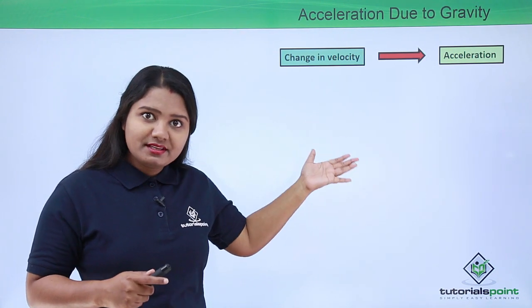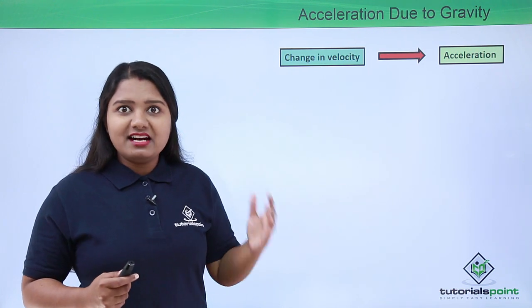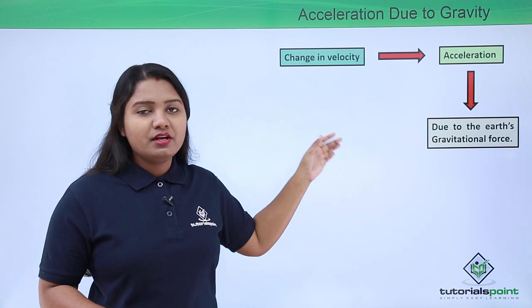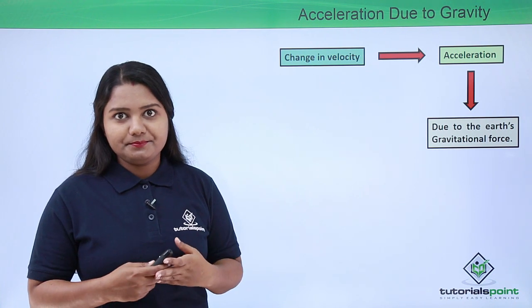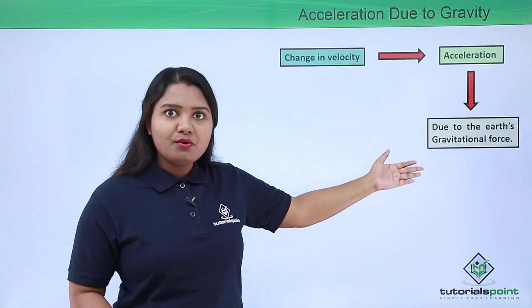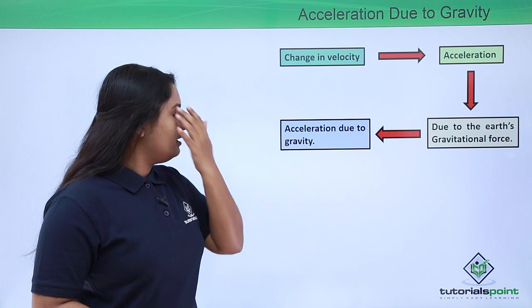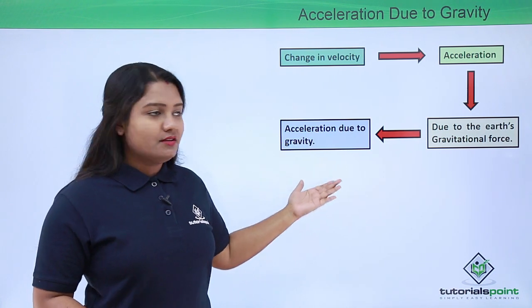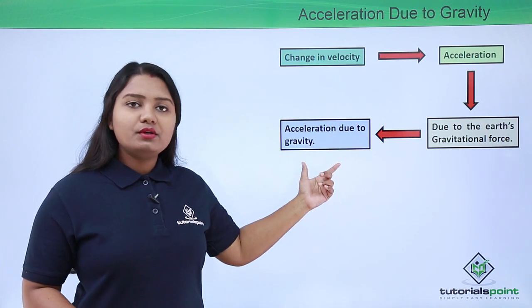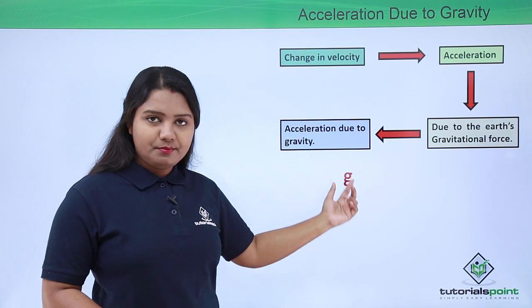Now, what is this force which is producing this acceleration in the freely falling body? It is none other than the gravitational force, which is the only force acting on the body falling down towards the surface of the Earth. Since this acceleration is due to the gravitational force, we call it the acceleration due to gravity.